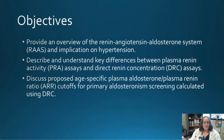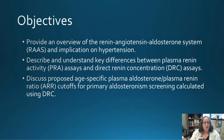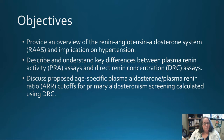Today's objectives: we're going to talk about the RAS system — the renin-angiotensin-aldosterone system — and how it controls blood pressure and causes hypertensive disease. By the end, you'll be able to describe key differences between plasma renin activity (PRA) assays and direct renin concentration (DRC) assays. Finally, we'll discuss age-specific cutoffs for screening for primary aldosteronism using DRC assays.